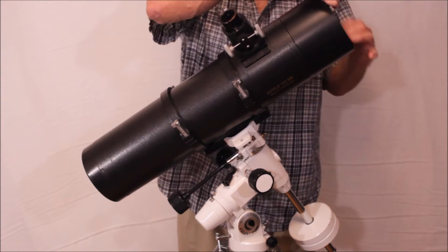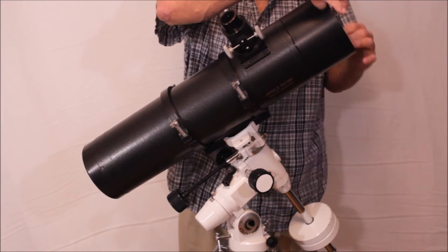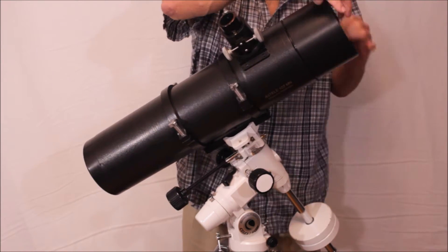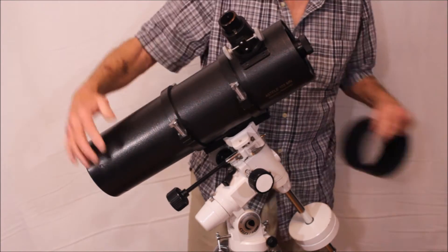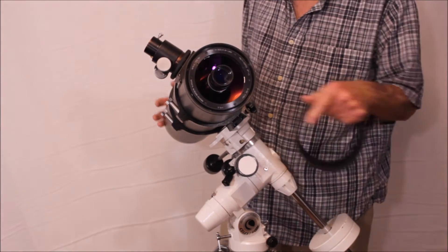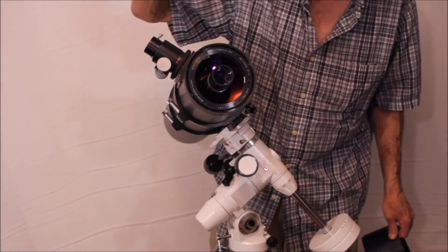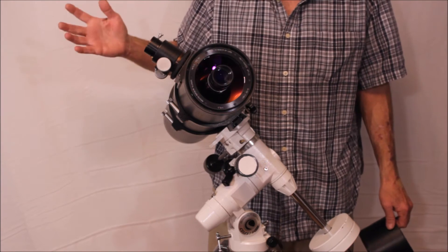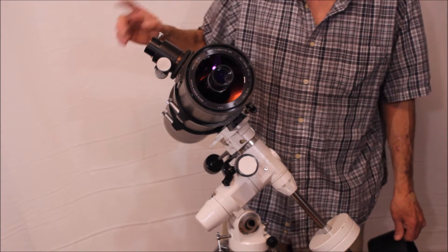Now you remove the dew shield so you can see what it looks like underneath there. Now you can see something very strange about this telescope. See this gizmo here? That's the finder. Let me give you a close-up and show you how that works.